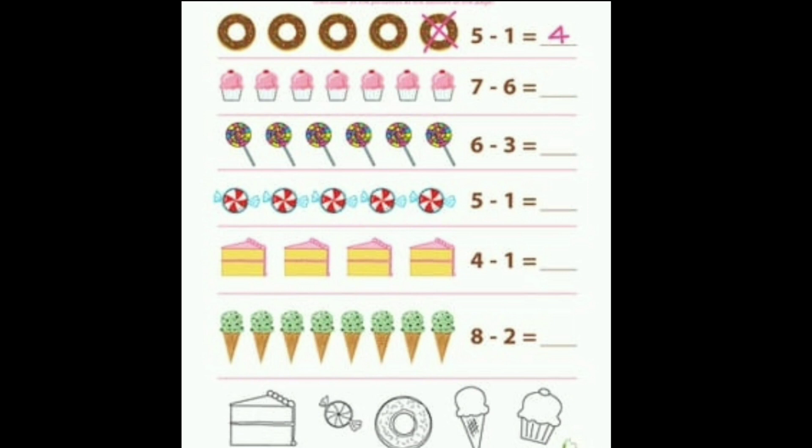1 is the smaller number here, so we are going to cross or take away 1 donut. Let's count it out. How many donuts are left? Count again: 1, 2, 3, 4. 4 donuts are left.